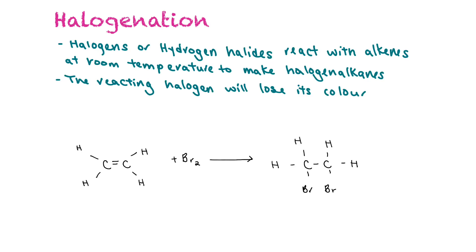During halogenation, halogens or hydrogen halides will react with alkenes at room temperature to make halogen alkanes. And the reacting halogen will lose its color during the process of the reaction. So in this example, we have ethene again. And it's reacting with bromine, which normally has a brown color. But as it's reacting and forming the halogen alkanes, so the 1,2-dibromoethane, the brown color is lost and it turns to colorless.